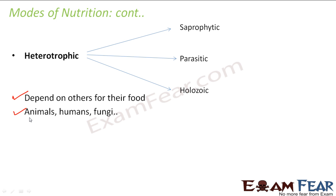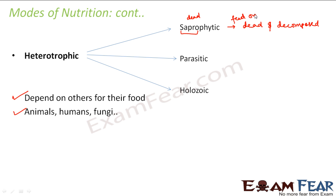Heterotrophic nutrition can be further classified into different types. The first is saprophytic — the word 'sapro' means dead. In saprophytic mode, the organism feeds on dead and decomposed matter, such as dead plants and animals. The best example of saprophytes is fungi, which feed on dead and decayed material.